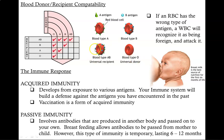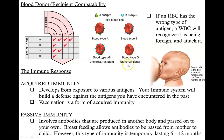On the other hand, if you have both types of antigens, you can receive blood from anybody, but you would only be allowed to donate blood to other people with type AB. Blood type AB are called the universal recipients because they can get blood from anybody, while blood type O are called universal donors because they can donate their blood to anybody.